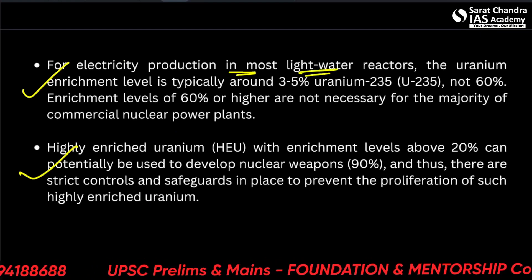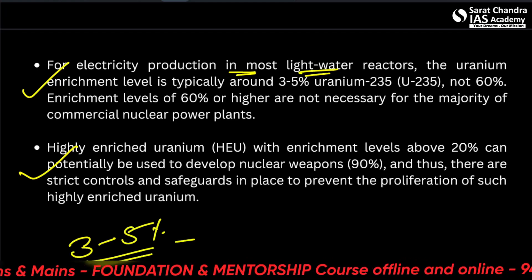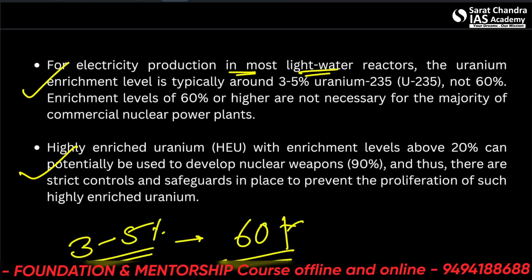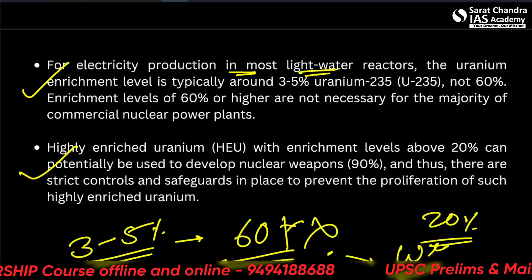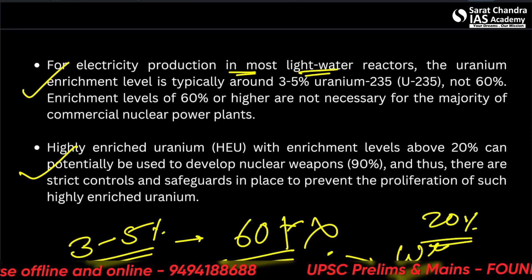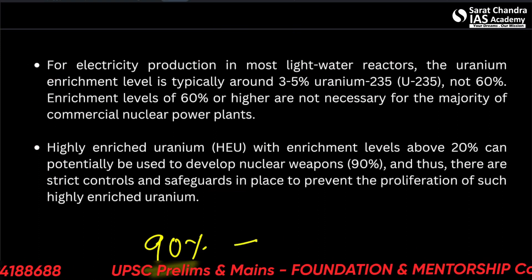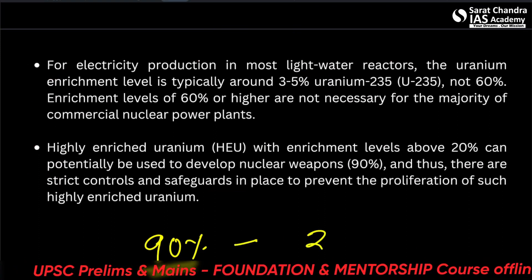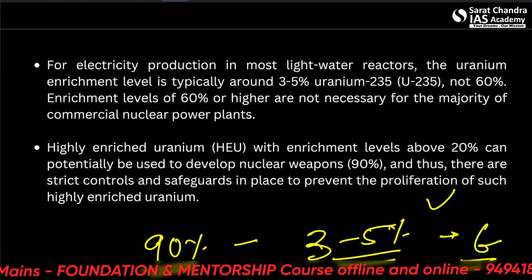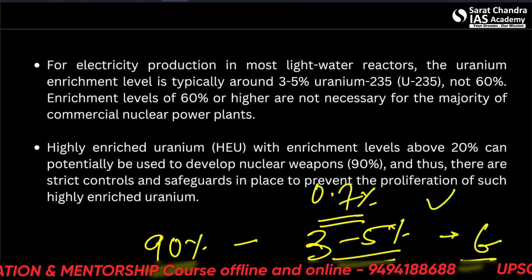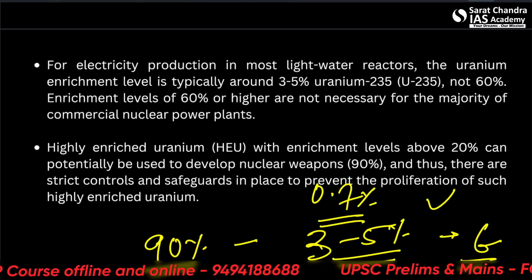For electricity production, most light water reactors use uranium enriched to only three to five percent — not 60 percent. 60 percent is weapon grade. Anything above 20 percent is weapon grade. Naturally occurring uranium is 0.7%, three to five percent is electricity grade, and anything more than 20 percent is weapon grade. Please remember this — it came as a statement already.